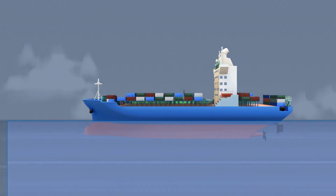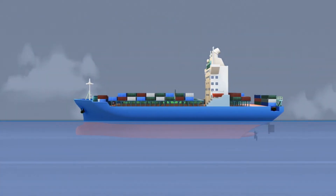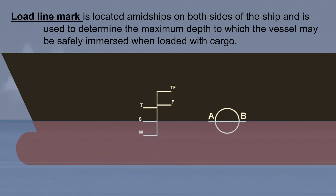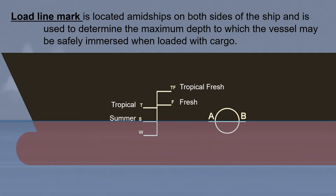How do we determine the change in the ship's draft when she sails from saltwater to freshwater or vice versa? Let us take a look at the ship's load line mark. The load line mark is located amidships on both sides of the ship and is used to determine the maximum depth to which the vessel may be safely immersed when loaded with cargo. TF stands for tropical fresh, F for fresh, T for tropical, S for summer, W for winter. Below the winter load line mark is the winter north Atlantic, applicable for small vessels of less than 100 meters in length.